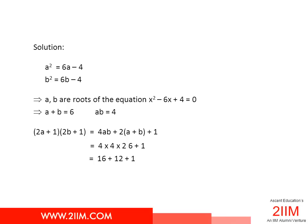We see that a² = 6a - 4, b² = 6b - 4. In other words, a and b are roots of the quadratic equation x² - 6x + 4 = 0. This is the most important step.